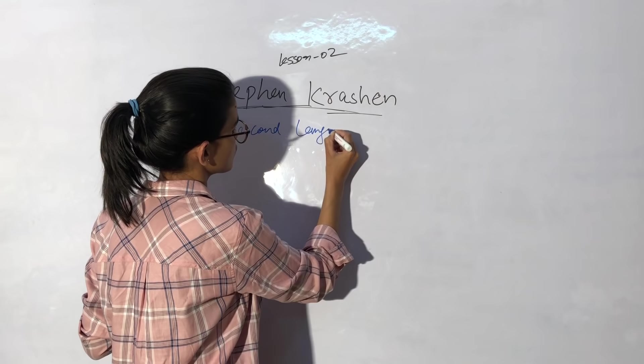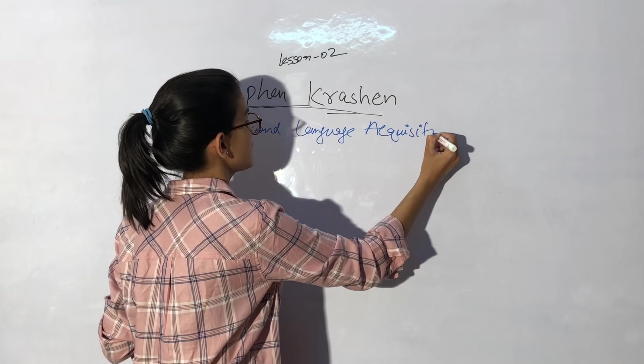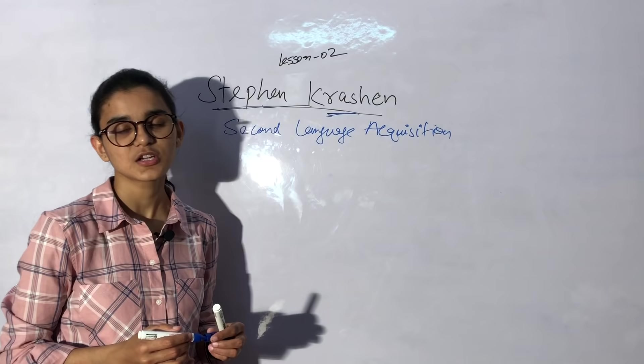Now, we have 5 types of hypotheses, which is a very important name, which is a famous linguist or an educational researcher, so we will understand the theory.